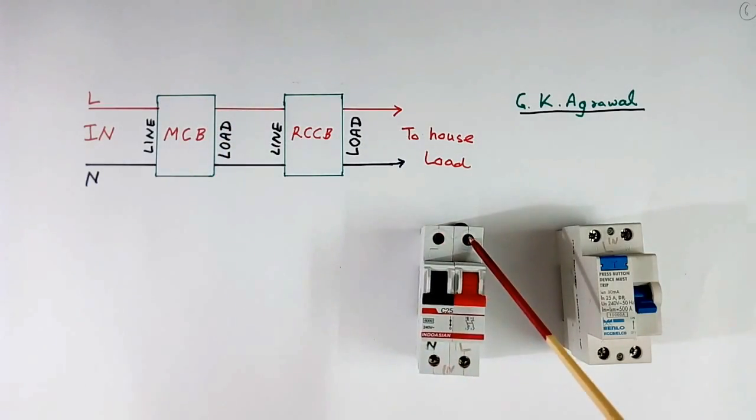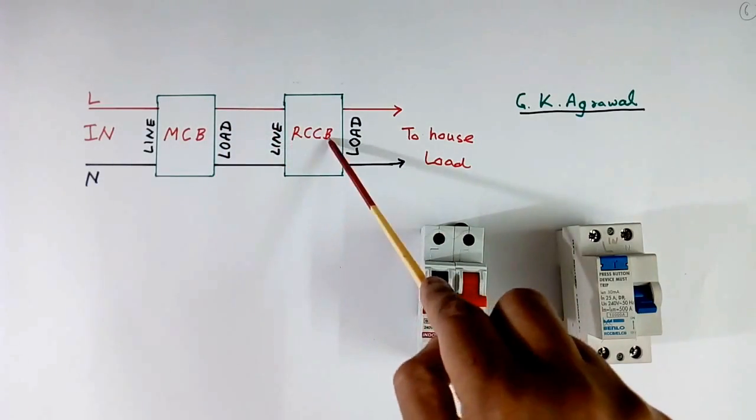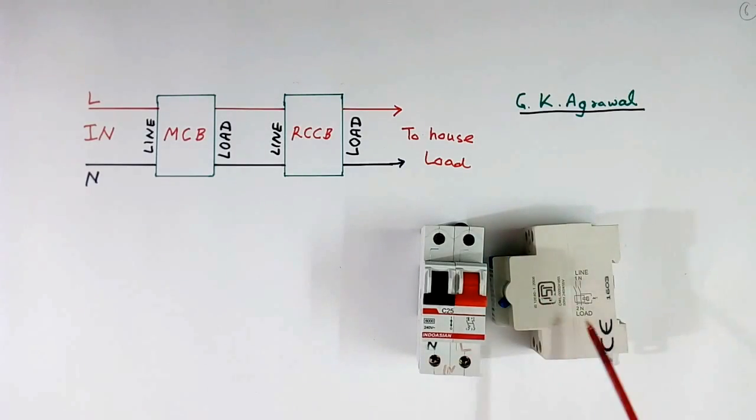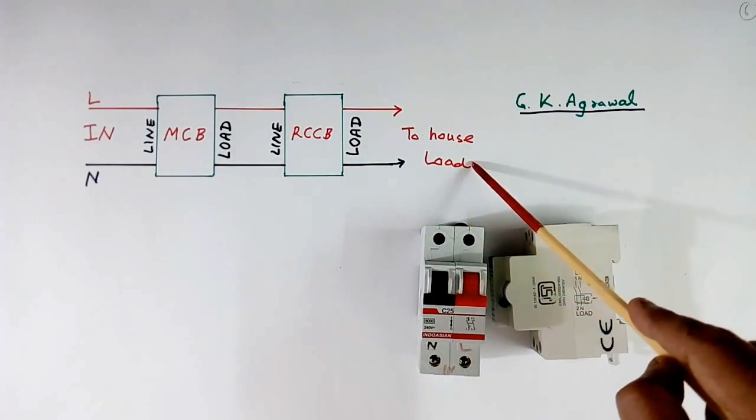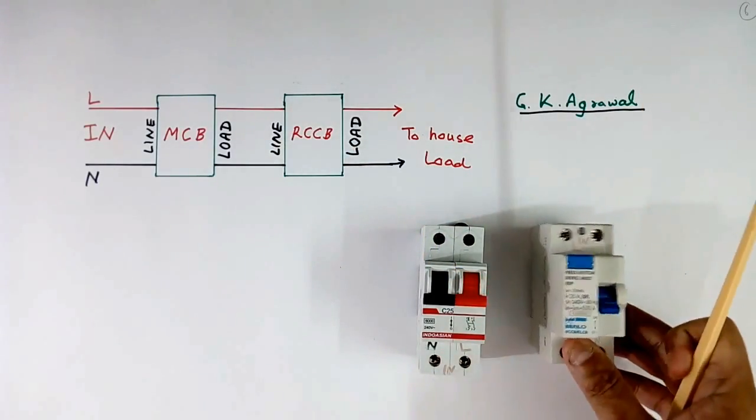This wire will go to the line of RCCB. In case of RCCB, line is here. So this is line. This is load. Load side will go to house load. That way connections are made.